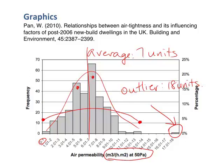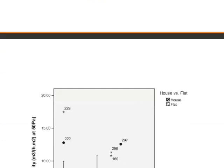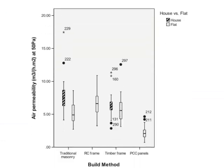Now as is typical in research, the main research question concerns relationships between variables. In this case, the authors want to study the air permeability across different building types, which is a qualitative variable, and different dwelling types, which is also a qualitative variable. So to do this, the author constructs a box plot, which is a useful plot for when we want to compare a quantitative variable across some nominal categories.